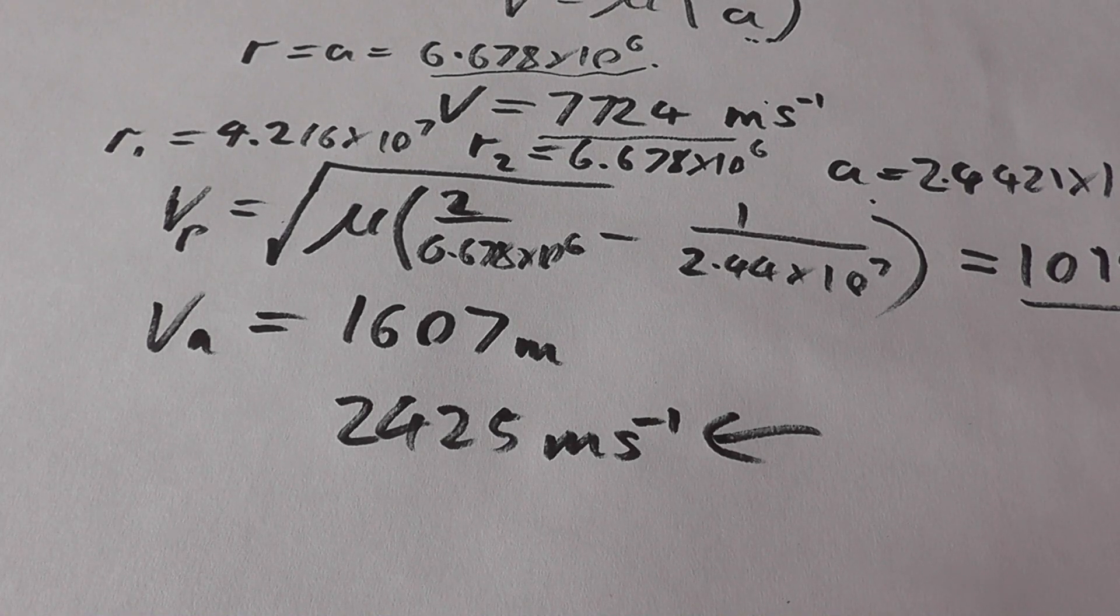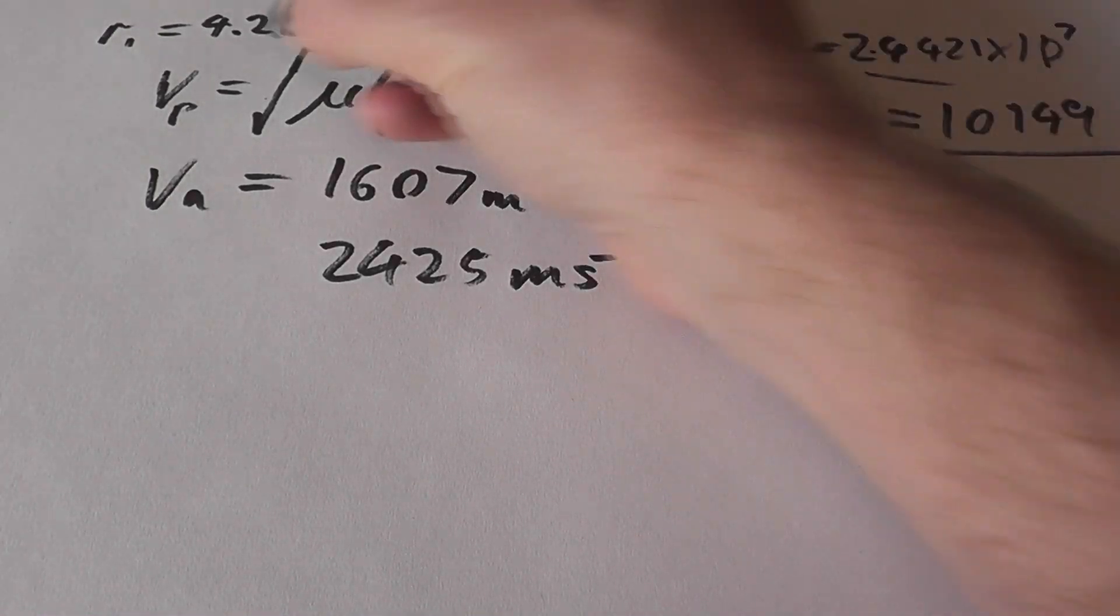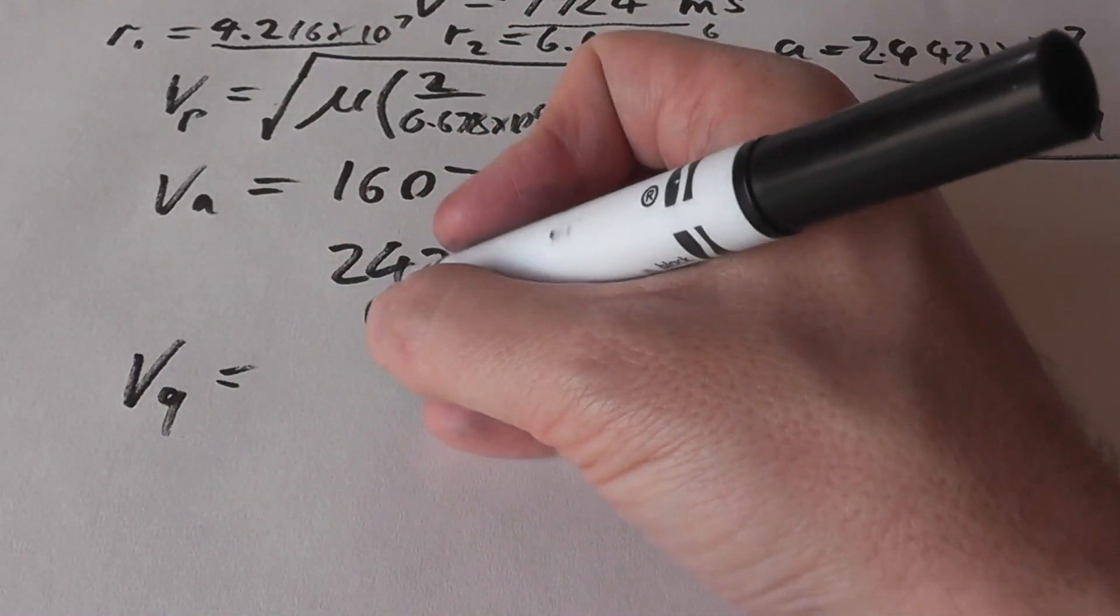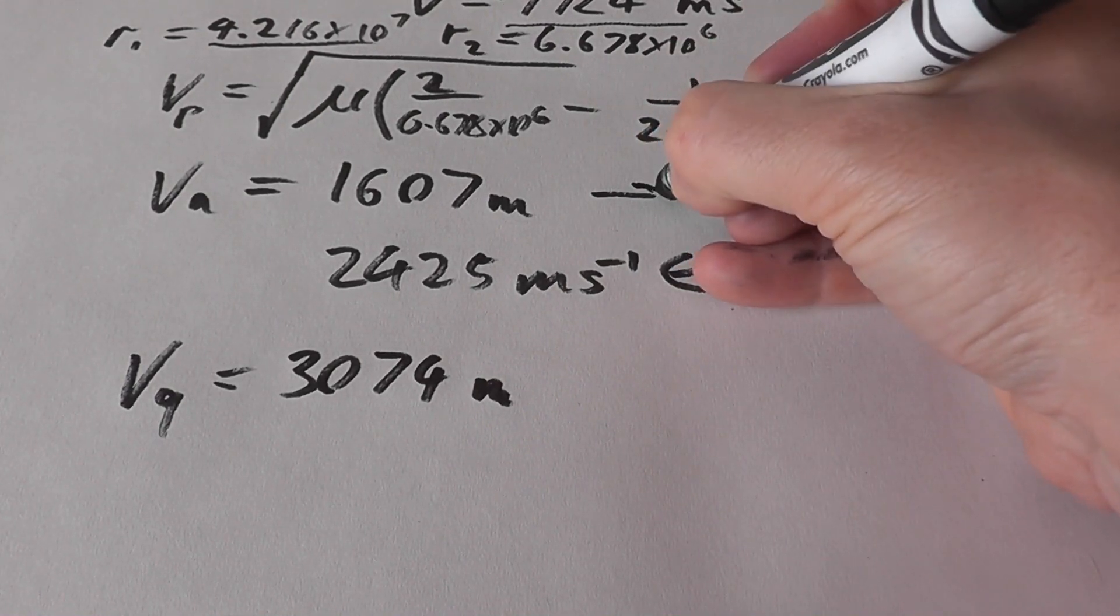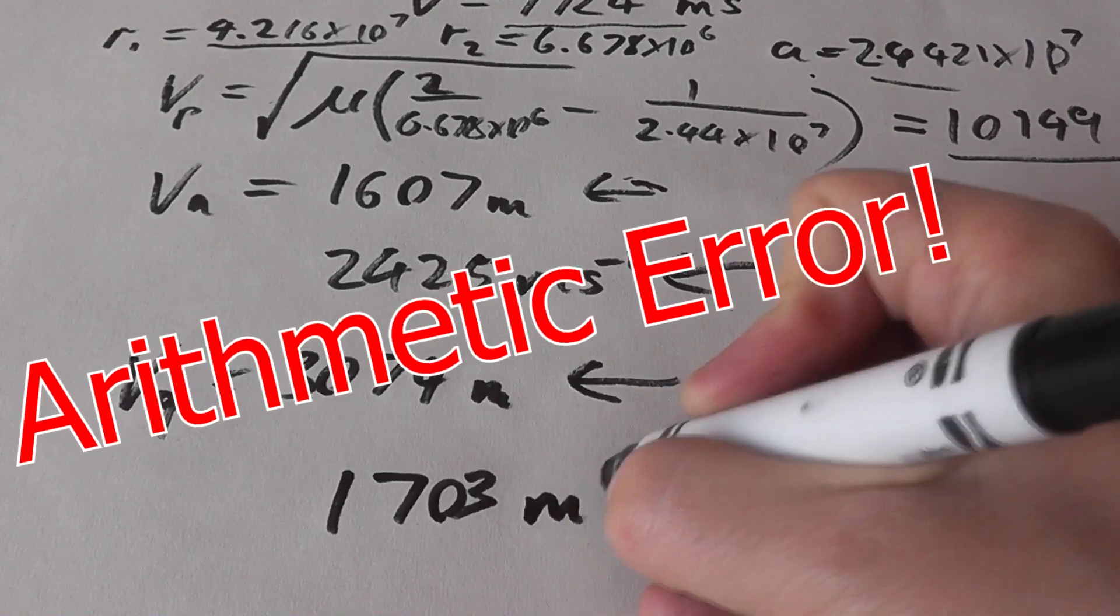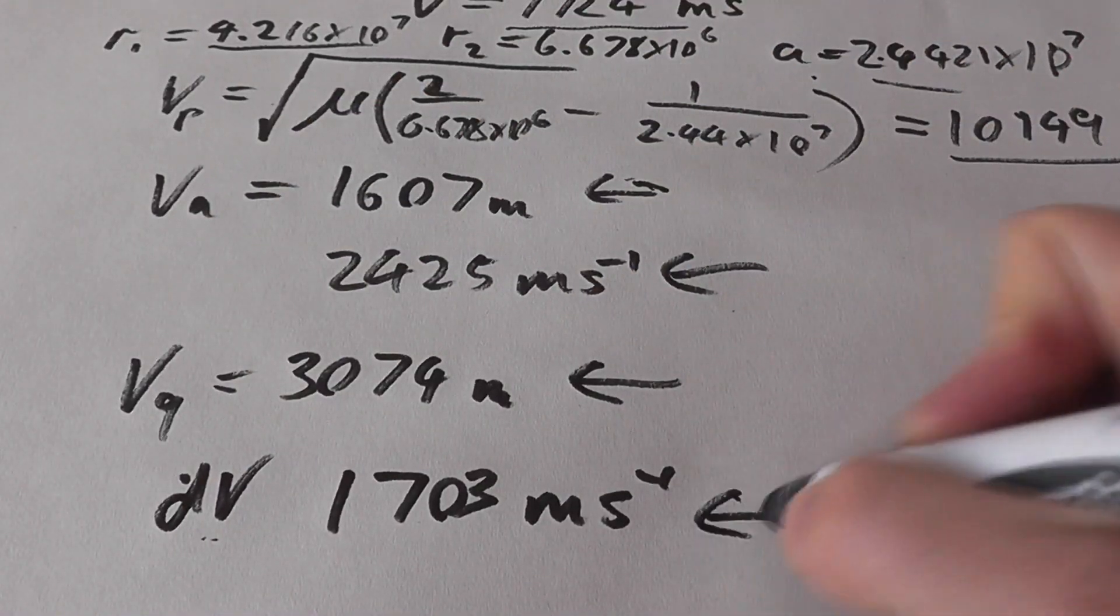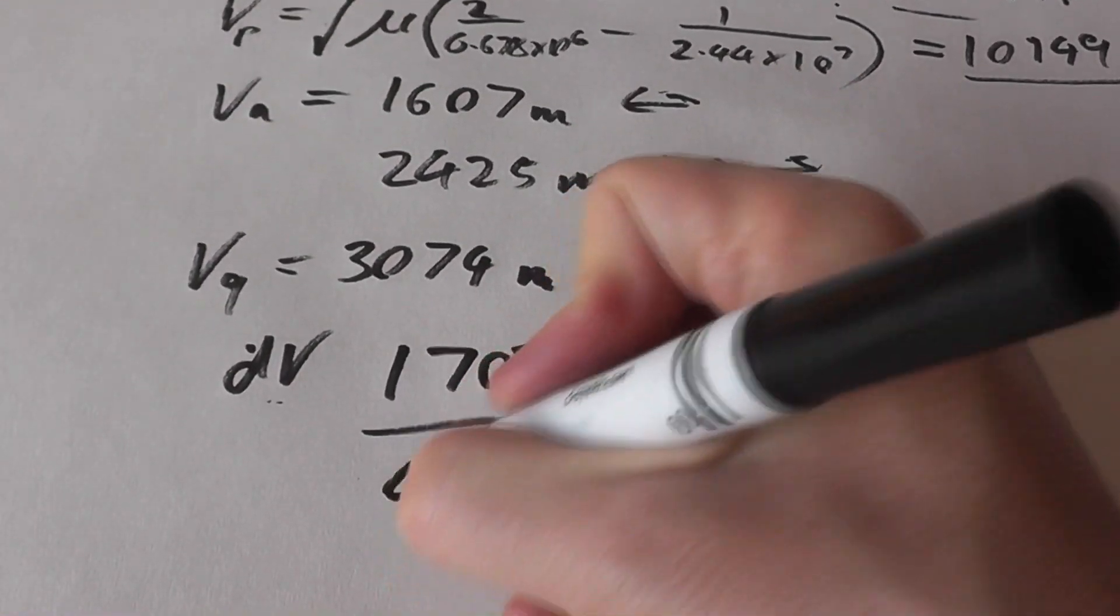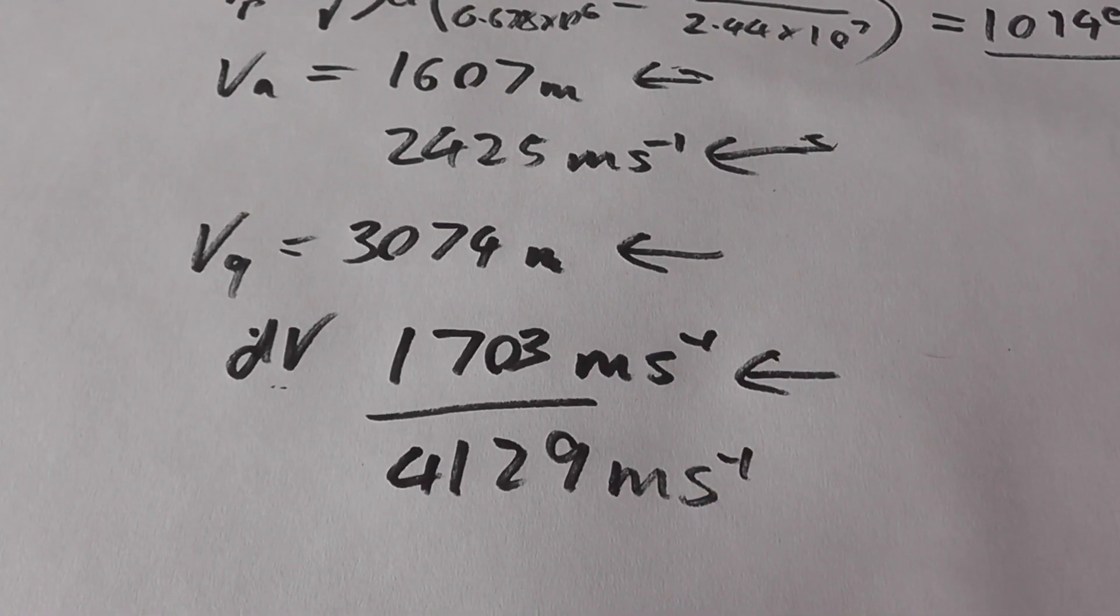Once you get to that orbit, you want to circularize back to your geostationary orbit. This time A becomes your geostationary velocity, and that means that V at geo is equal to 3,074 meters per second. So to actually get into geostationary orbit, you have to go from this speed to this speed, which is 1,703 meters per second delta V. You can add these two numbers, and you can get the total delta V as 4,129. And that is us calculated the delta V to get into a geostationary orbit from an equatorial orbit around the planet Earth.